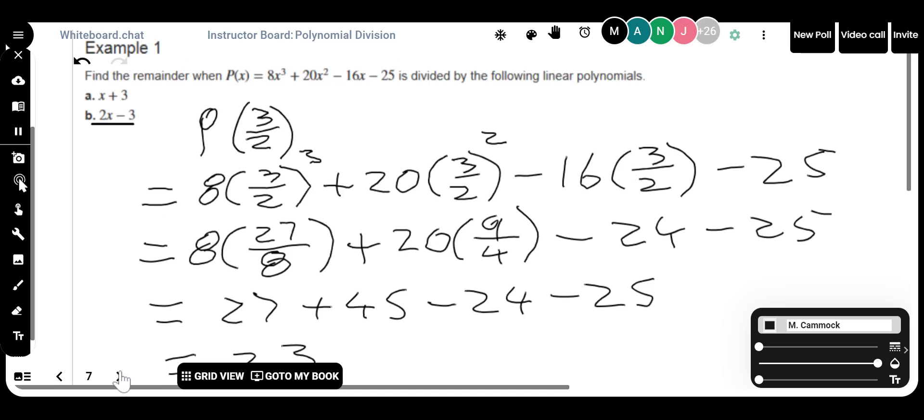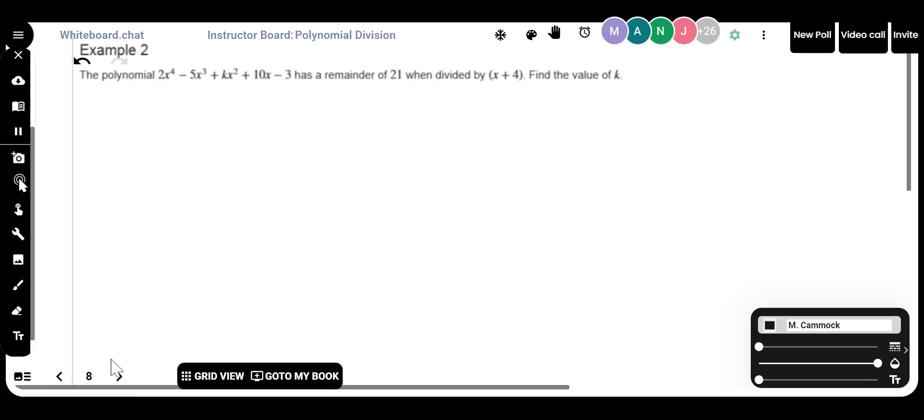Let me throw a little more challenging question at you. This polynomial has a remainder of 21 when divided by x plus 4. What is the value of k? They tell us what the remainder is, they tell us what we're dividing by, but there's a missing number in the question, and it's the k. What do you think we could do to figure this out? You see a question there. What do you think would be a good way to figure this out?